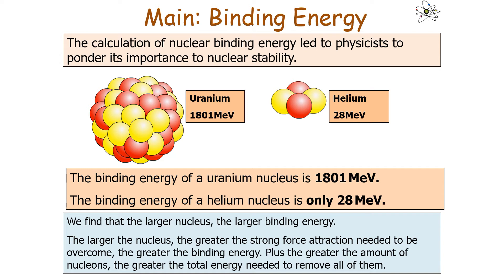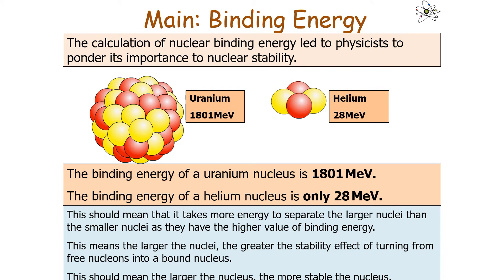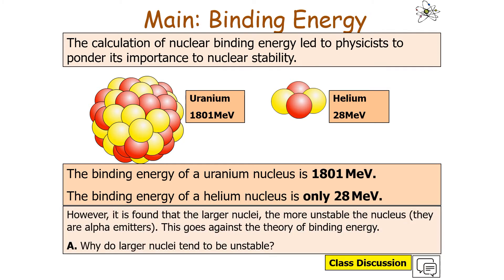A larger nucleus means more nucleons, so a greater total energy is needed to remove all of them. In theory this suggests larger nuclei are more stable, since uranium needs far more energy to separate its nucleons than helium. So in theory, the larger the nucleus, the greater the stability effect of binding free nucleons. However, larger nuclei tend to actually be more unstable because they tend to be alpha emitters, which goes against the simple theory of binding energy.